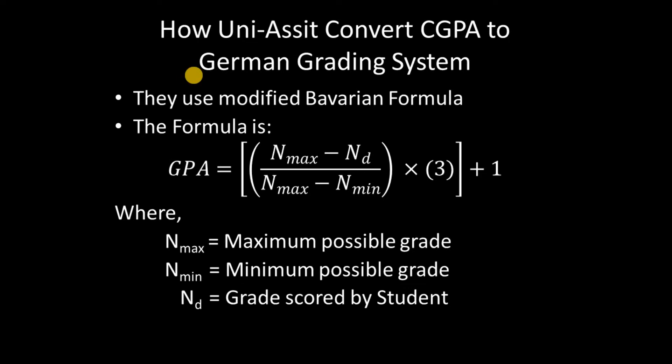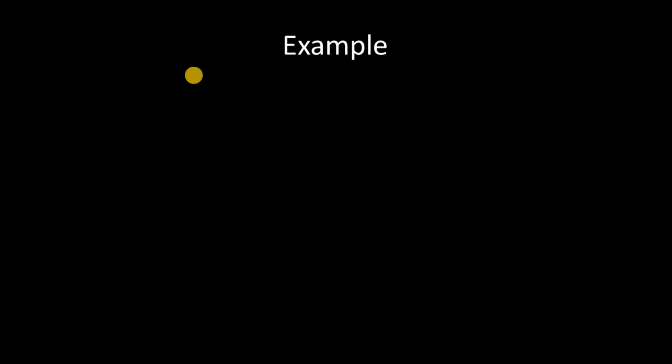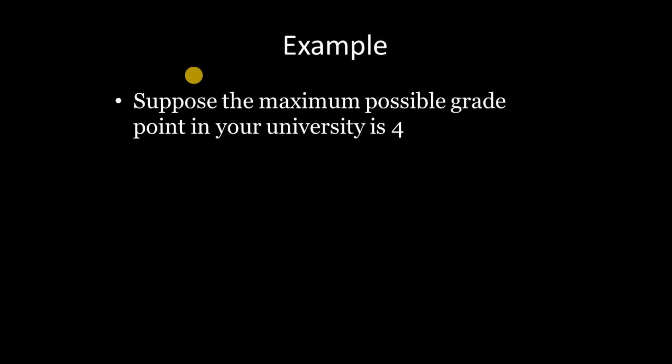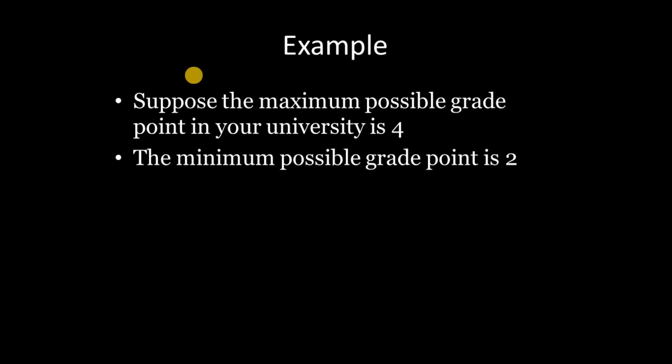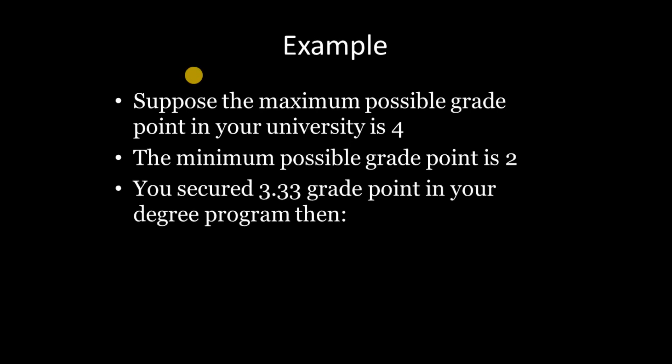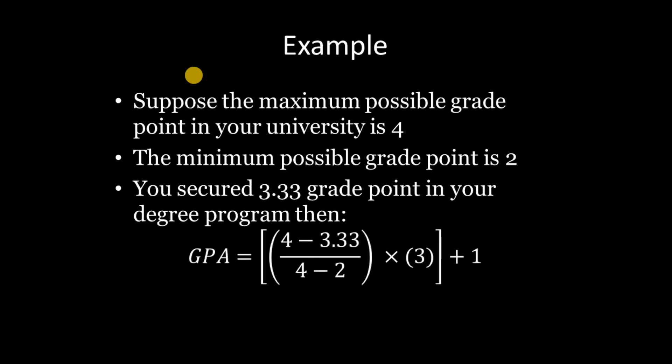Here is an example. Suppose you study in a university where the maximum possible grade point is 4 and the minimum possible grade point is 2, and you secured 3.33 grade points in your degree program. Putting these values into the formula: ((4 − 3.33) / (4 − 2)) × 3 + 1, your resulting grade point average in the German grading system is 2.